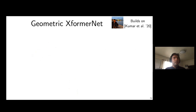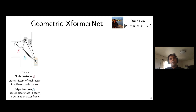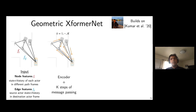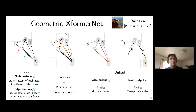We put all these intuitions together in a multi-stage graph neural network called the Geometric Transformer Net (GTN). Node features are the state and history of each actor; edge features transform one actor into another frame. We encode these features and do k rounds of message passing, producing two outputs: the discrete mode for each edge — which actor is yielding to which — and T-step trajectory predictions for each node.